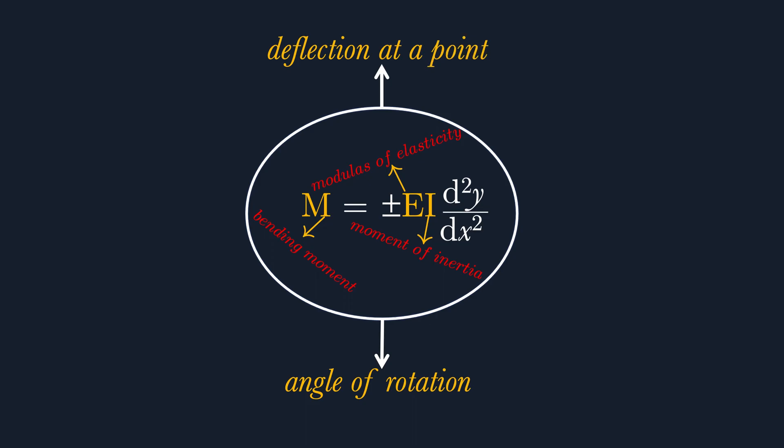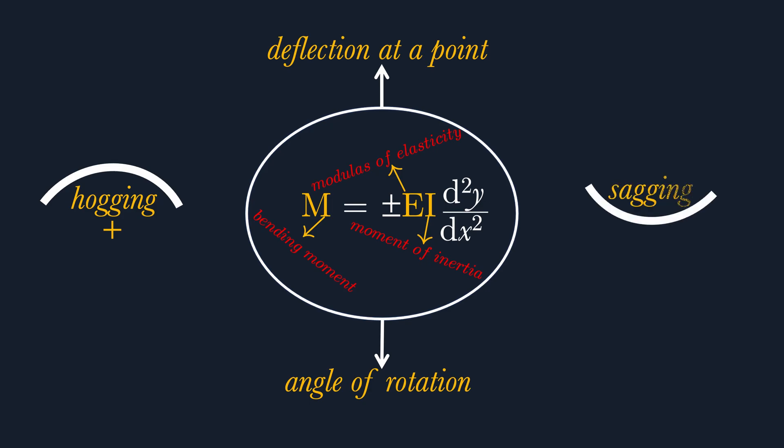When I showed you how beams deflect, we only considered one case. Beams can either hog, which is called positive bending, or sag, which is called negative bending. If our beam is sagging, we put a negative on the formula, and if our beam is hogging, we put a positive.